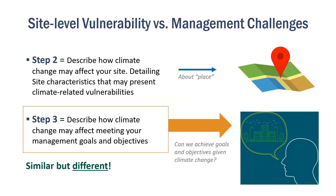Step two is about how climate change affects the place where you're working — how vulnerable is this site, and can it cope with the expected changes from warmer temperatures, increased precipitation, or other climate-related disturbances? Then in step three, we evaluate how climate change will affect the feasibility of meeting our management goals under current management. Site-level vulnerability is drawn from site characteristics, whereas management goals vary based on the values and perspectives of the landowner.